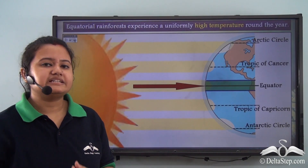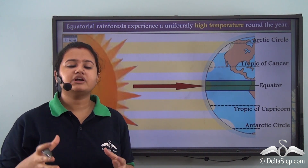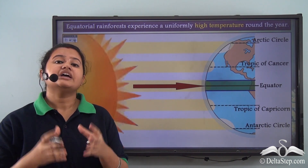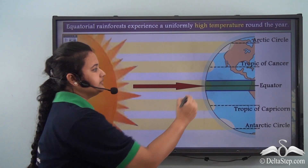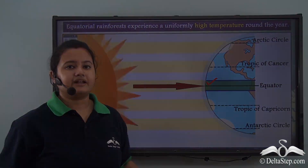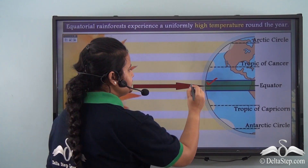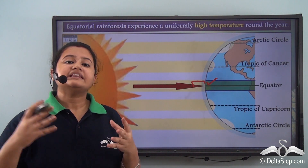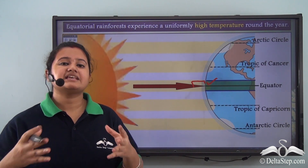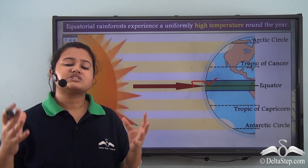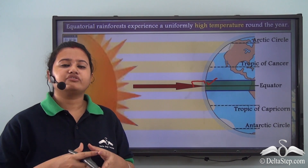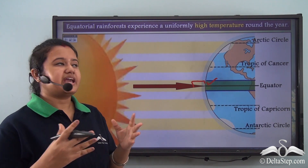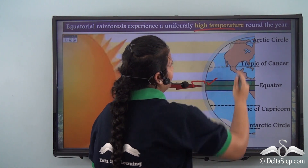We shall now discuss in detail about the climatic conditions of the equatorial rainforest. The equatorial rainforest is located in the equatorial region, which receives direct rays of the sun. The sun's rays are always perpendicular at or near the equator, and the heat is very intense as the sun's rays are concentrated over a small region. The intense heat heats up the equatorial region more.